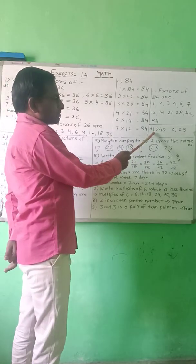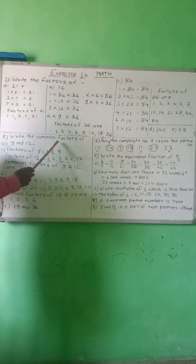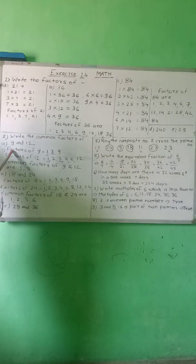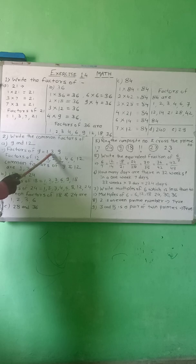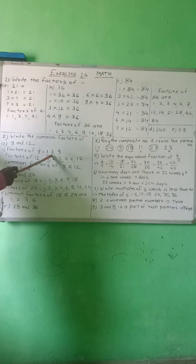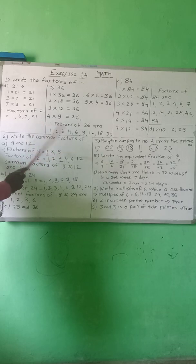Numbers 214 and 29 — you do it yourself. Next, write the common factors of 9 and 12. First, find out the factors of 9. 1 is a factor of every number. Then 2 does not divide 9, so remove it. Take 3: 3 times 3 is 9, so 3 is a factor of 9. Numbers 4, 5, 6, 7, 8 — 9 is not present in those tables. Only 9 itself: 9 times 1 is 9. So factors of 9 are 1, 3, and 9.